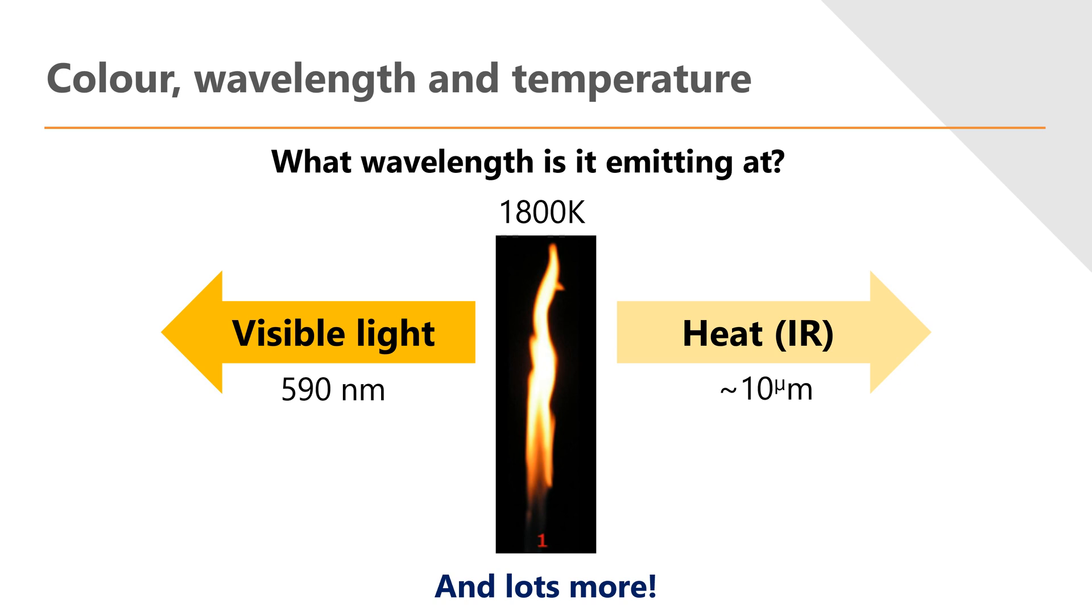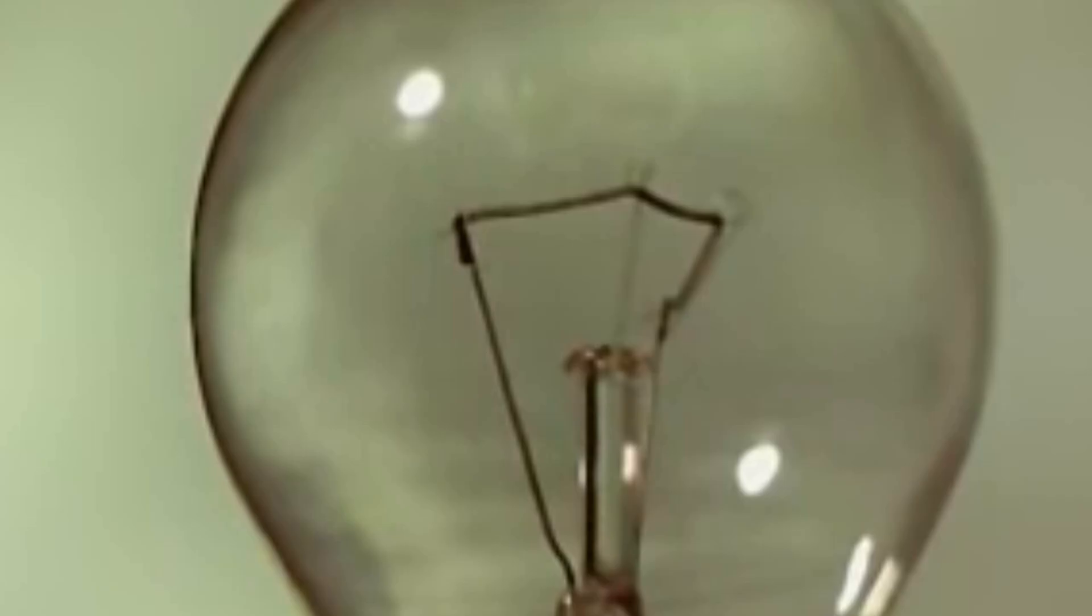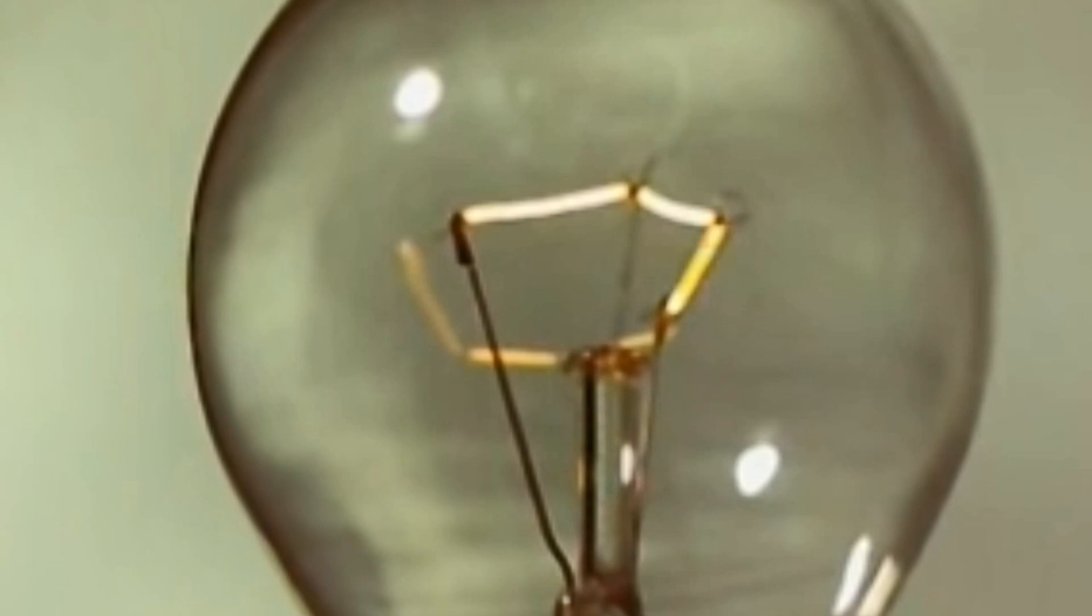We can imagine the same with a filament light bulb. This is a slow motion footage of a light bulb being turned on. When you flick the switch, as the current runs through the filament, as the electrons run through, resistive heating causes it to get warm and it starts to glow, first red, then yellow, and then through to white.